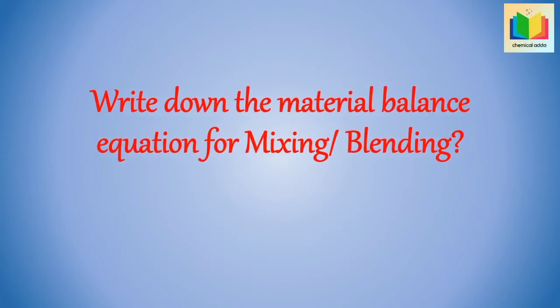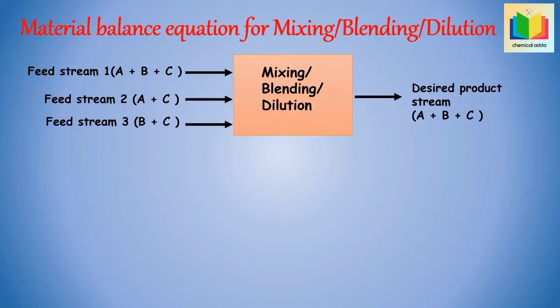Write down the material balance equation for mixing, blending and dilution. In mixing and blending operations, a desired quantity of product is obtained by mixing weak acid and concentrated solution — an example is preparation of desired mixed acid. In dilution operation, a concentrated stream is diluted by the addition of solvent — an example is dilution of sulfuric acid.